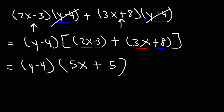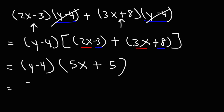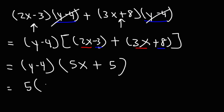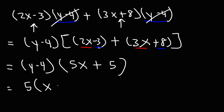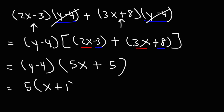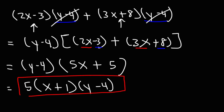We could factor this even further by taking out the GCF of 5 from 5x plus 5. 5x divided by 5 is x, and 5 divided by 5 is 1. So the final answer for this problem is 5 times (x plus 1) times (y minus 4).